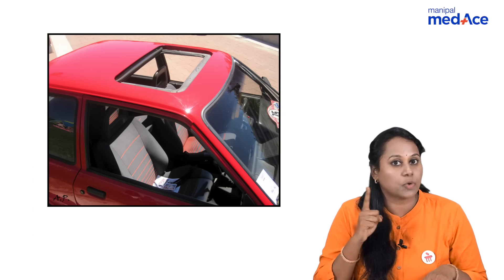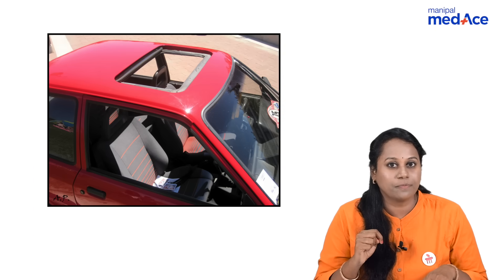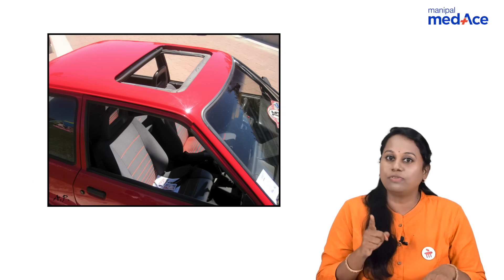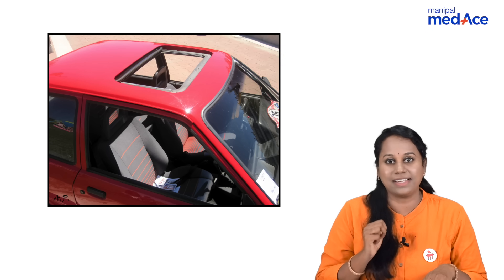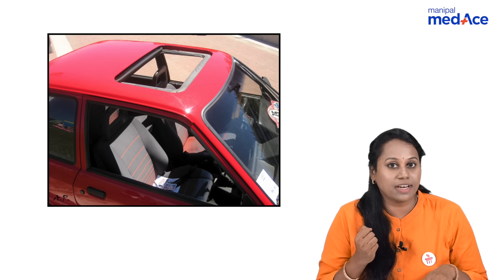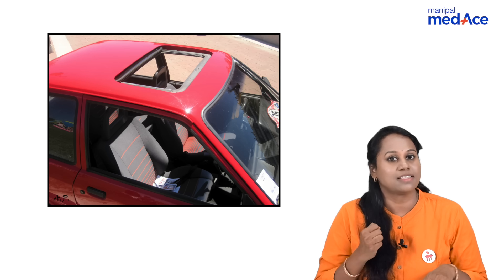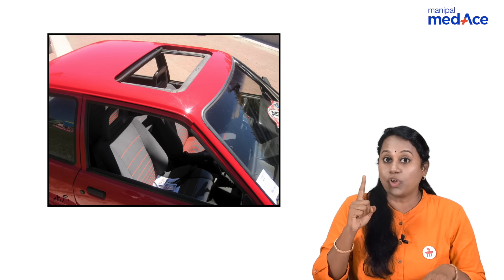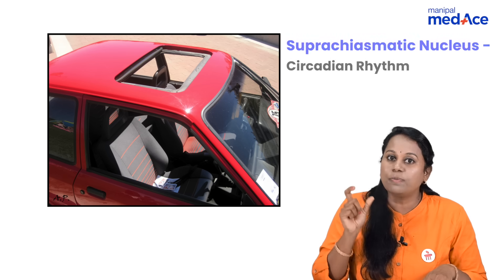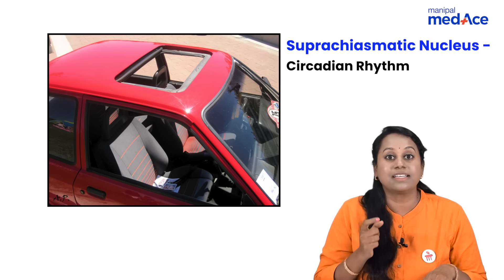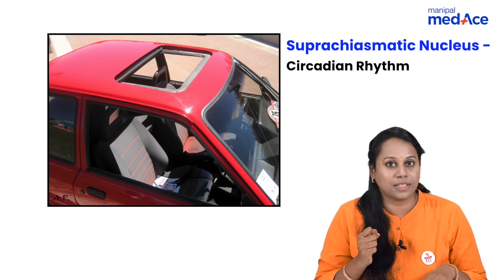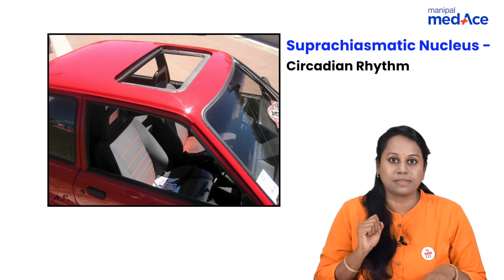In the top part of the car, there is an opening — the sunroof or moonroof. Sun and moon are related to the day and night cycle. The regulation of the day and night cycle is the circadian rhythm. So, the top part of the car — top is supra — the suprachiasmatic nucleus regulates circadian rhythm and day and night cycles.